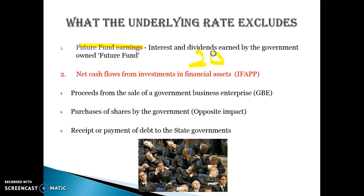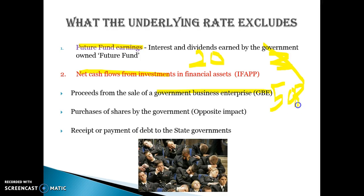So if the headline rate was $20 billion, and that included future fund earnings of $3 billion, that would get excluded and the surplus would become $17 billion instead of $20 billion. The underlying rate also excludes cash flows from selling a government business enterprise. So if the government were to sell Australia Post and collect $50 billion, that would get excluded because it's a one-off payment — it's not really a sign of the strength of the economy, and they're only going to get it for one given year.